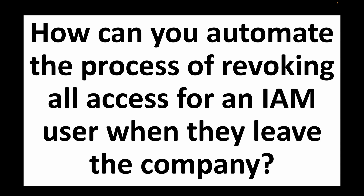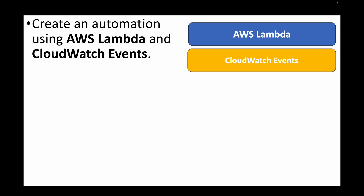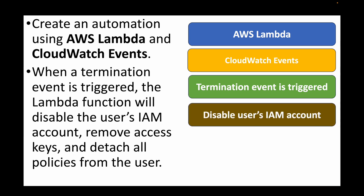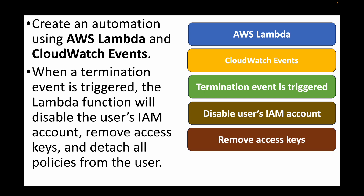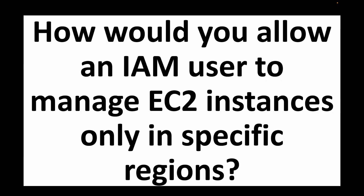The next question is: how can you automate the process of revoking all access for an IAM user when they leave the company? For this we use AWS Lambda and CloudWatch Events. Whenever a termination event is triggered, that event triggers a Lambda function, which removes all the access keys of that user and detaches all policies from the user. CloudWatch Events monitors for that event, triggers Lambda, and Lambda takes all necessary actions to remove all information related to that user from the AWS account.